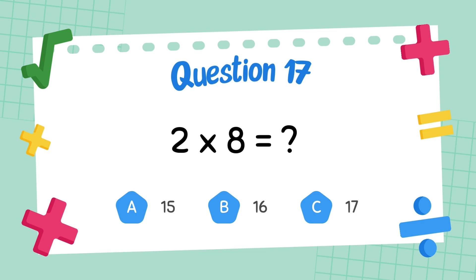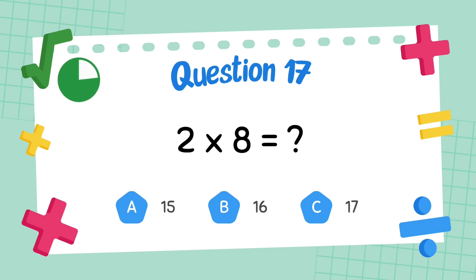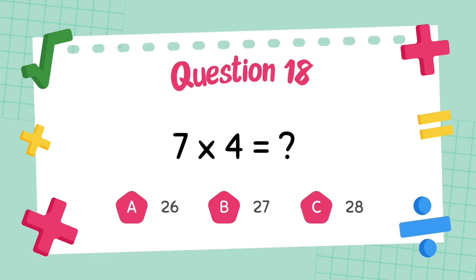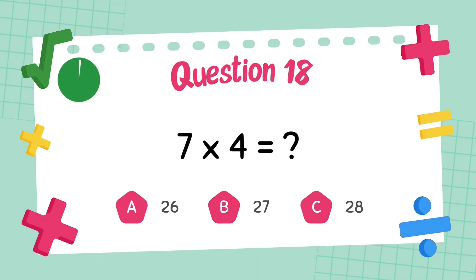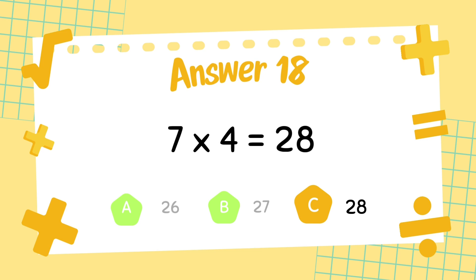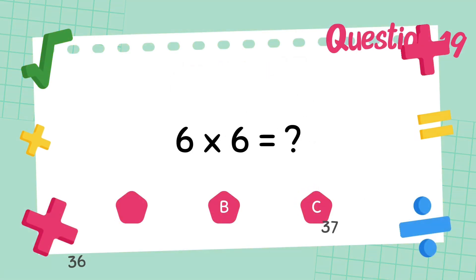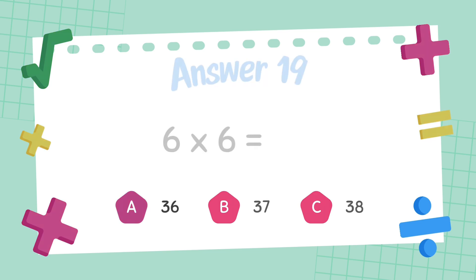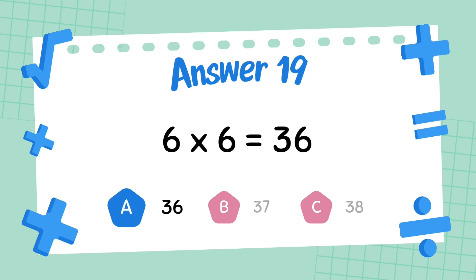What is 5 multiply 4? The answer is 25. What is 6 multiply 4? The answer is 36.